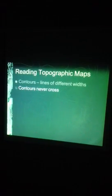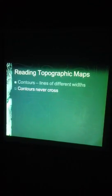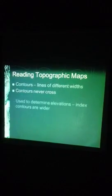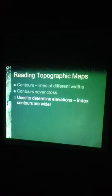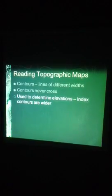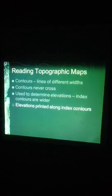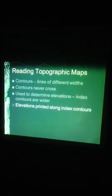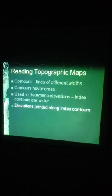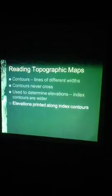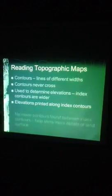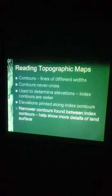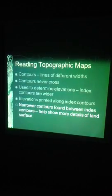Reading topographic maps. Contour lines are lines of different widths. Contours will never cross, because contour lines represent areas of the same elevation, so there's never going to be a time where contour lines intersect one another. The index contours are the wider, bold lines on the map, and the elevations are printed along them. The narrower contour lines found in between the index contours are there to help show more detail of the land surface.